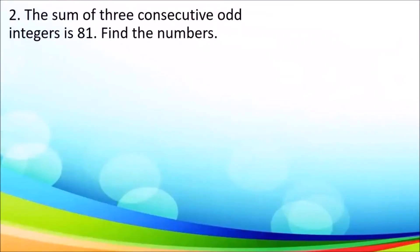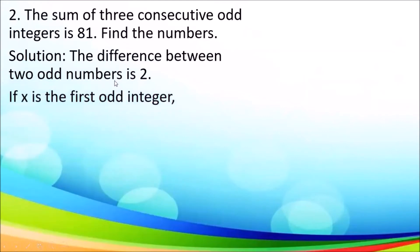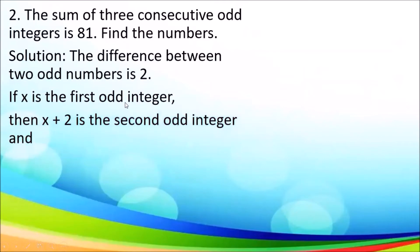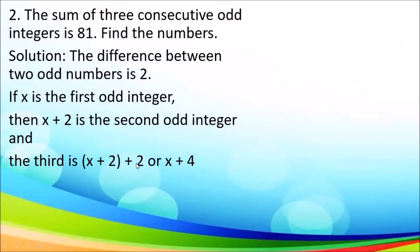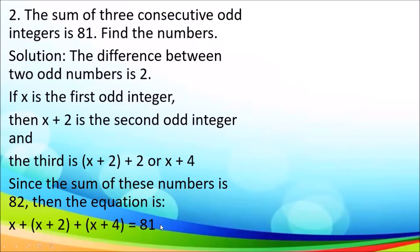Another example: the sum of 3 consecutive odd integers is 81. Find the numbers. Note that the difference between two consecutive odd numbers is 2 — for example, 1, 3, 5. Let x be the first odd integer, then x plus 2 is the second odd integer, and x plus 4 is the third. Since the sum of these 3 consecutive odd numbers equals 81, the equation is: x plus (x plus 2) plus (x plus 4) equals 81.